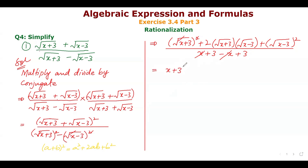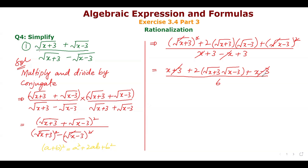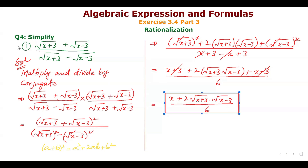So the numerator becomes x plus 3 plus 2 times under root x plus 3 into under root x minus 3 plus x minus 3. In the denominator, x cancels and plus 3 minus 3 cancels, leaving 6. The simplified result is x plus 2 under root x plus 3 into under root x minus 3, upon 6. This can also be written as under root x plus 3 plus under root x minus 3, whole squared upon 6.